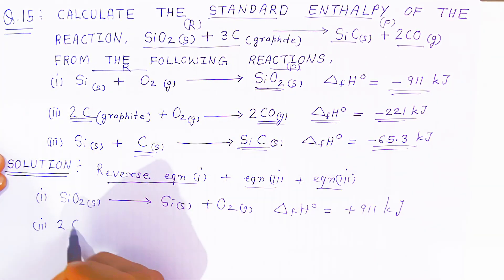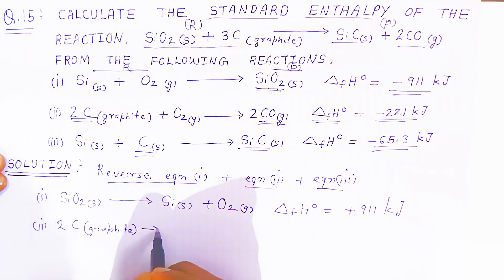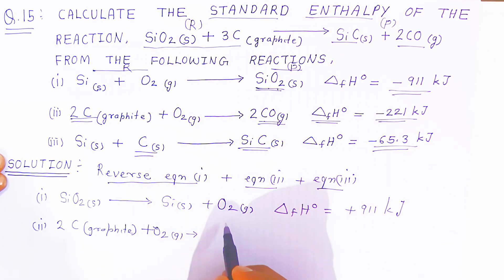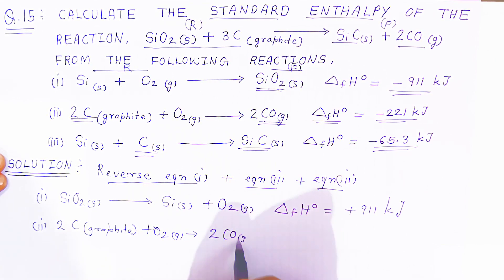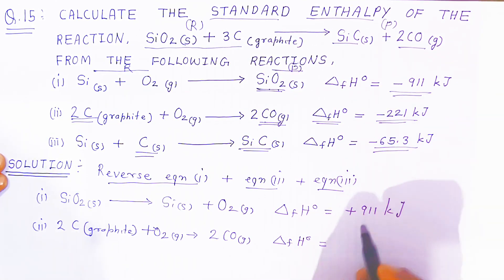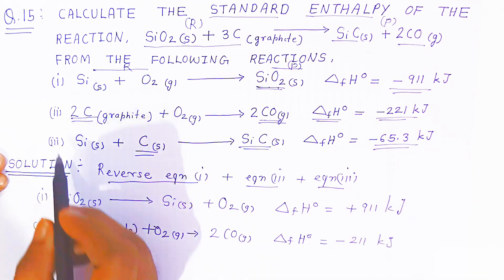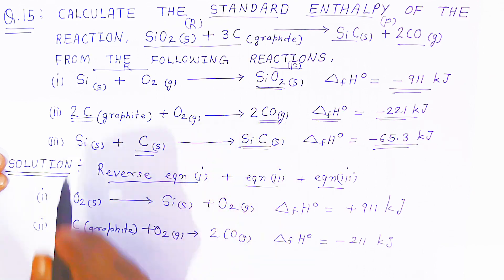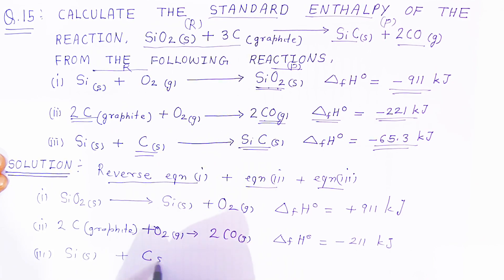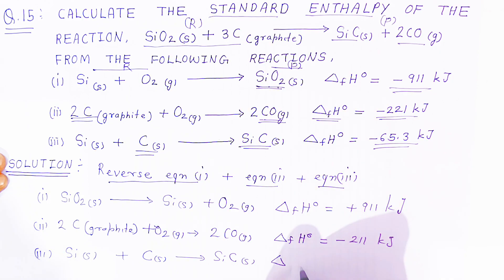The second reaction is written as it is: two carbon graphite reacting with oxygen forms carbon monoxide gas; standard enthalpy of formation is minus 221 kJ. The third reaction is also written as it is: silicon solid reacts with carbon solid forming silicon carbide; standard enthalpy is minus 65.3 kJ.